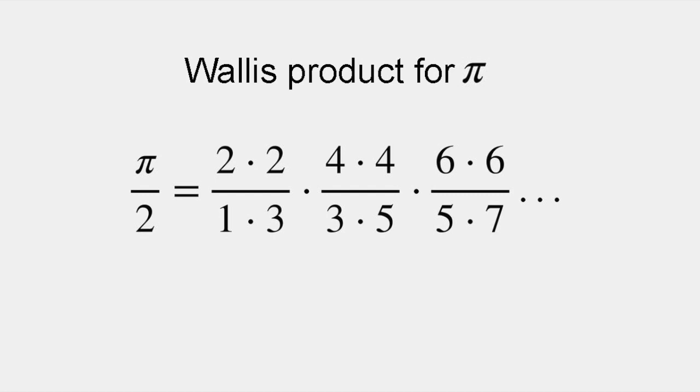Back in 1655, English clergyman and mathematician John Wallis, who introduced the symbol for infinity, found that 2 over 1 times 2 over 3 times 4 over 3 times 4 over 5 times 6 over 5 times 6 over 7, and so on, converges on the value pi over 2.